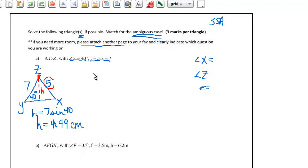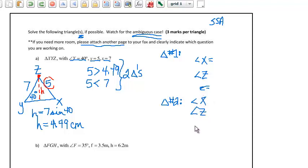Now, is 5 bigger than that? 5 is bigger than 4.49. Is 5 smaller than 7? Yes, 5 is smaller than 7. These two facts go together and tell me that there are two triangles, which means I'm going to have a triangle number 1 that I can find these things for, and I'm going to have a triangle number 2 that I need to find angle x, angle z, and little side z.